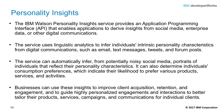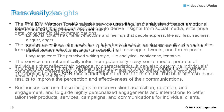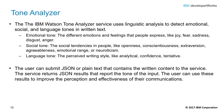The IBM Watson Tone Analyzer Service uses linguistic analysis to detect three types of tones from written text: emotions, social tendencies, and language style. Emotions include things like anger, cheerfulness, and sadness. Identified social tendencies include things from the Big Five personality traits used by some psychologists — these include openness, conscientiousness, extroversion, agreeableness, and neuroticism. Identified language styles include things like confident, analytical, and tentative.